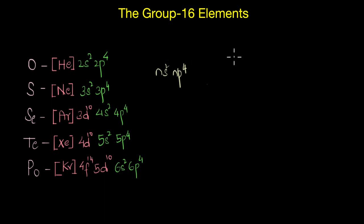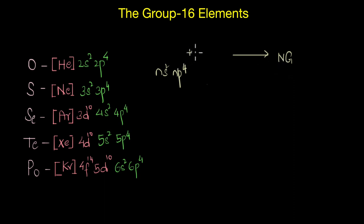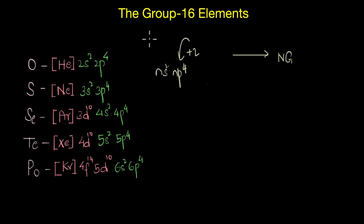As we are nearing the end of the periodic table, we move closer towards the noble gas configuration — the octet configuration. That means these elements just need two more electrons to satisfy their octet, and this is why they also tend to be more reactive. Let's now quickly look at the general trends in the properties of the Group 16 elements.